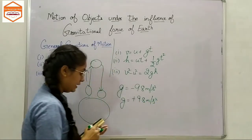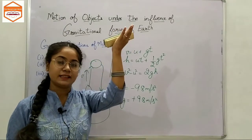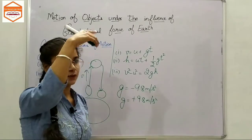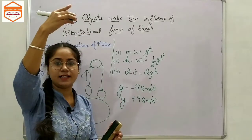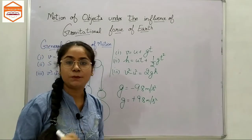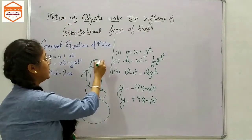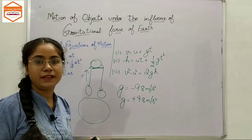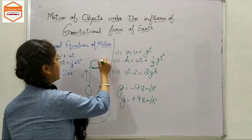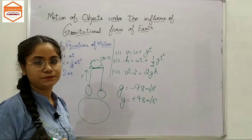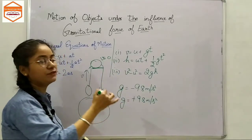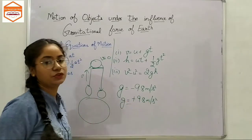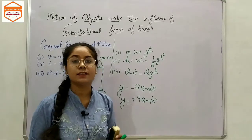When a body is going upward it is moving opposite to the gravitational pull of earth, so G is negative. When it is going down after reaching a certain height, G is positive. Also, at the highest point, the object stops for a moment — the velocity becomes zero at that point.